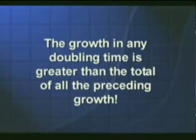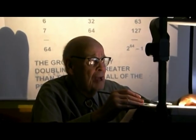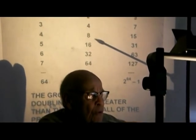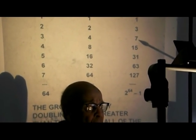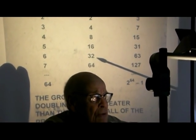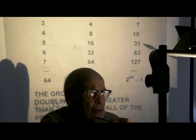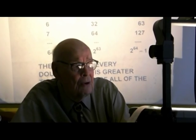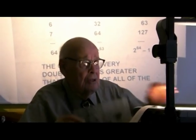There's something else very important: the growth in every doubling time is greater than the total of all of the preceding growth. When we put 32 grains on the sixth square, the 32 is larger than the total of 31 that were already there. Every time the growing quantity doubles, it takes more than all you'd used in all of the preceding growth.